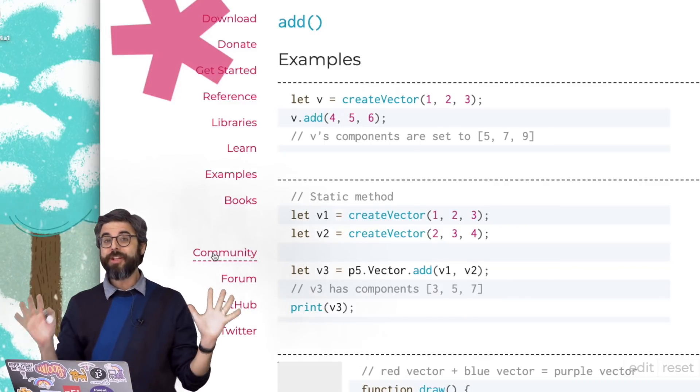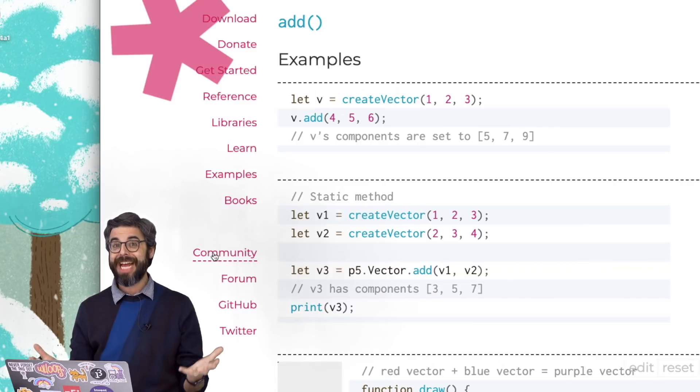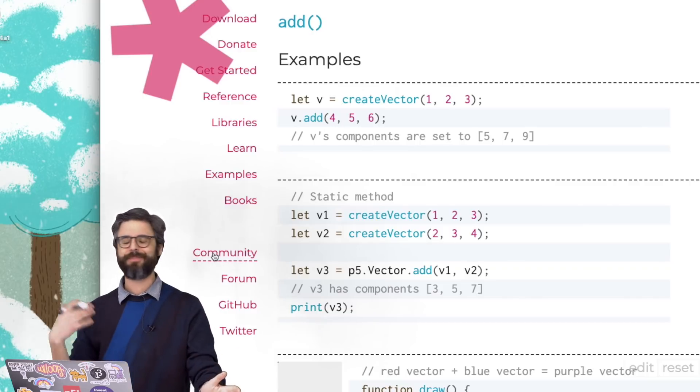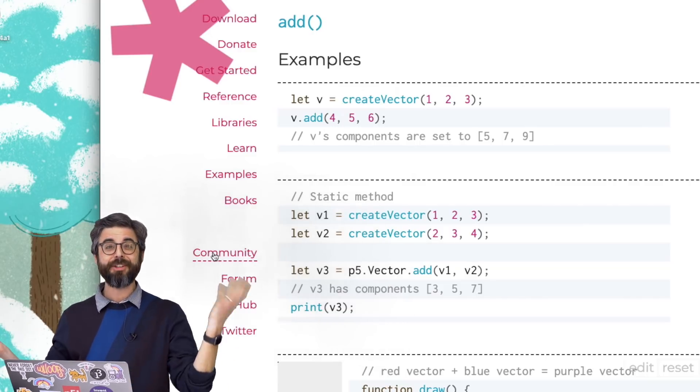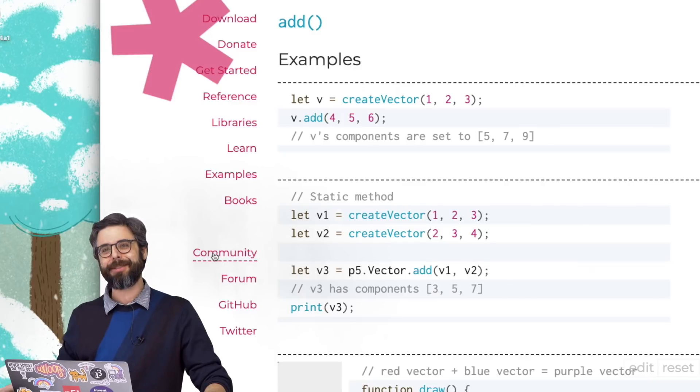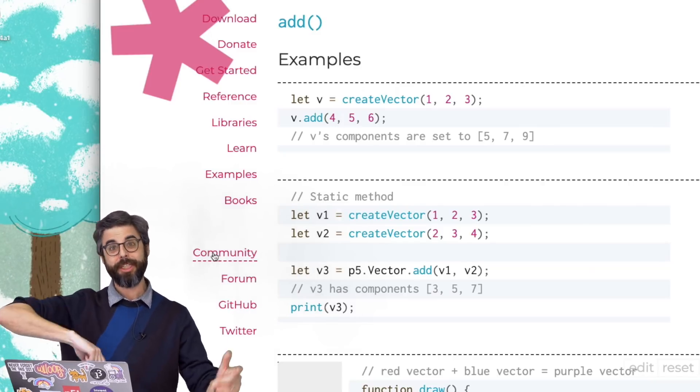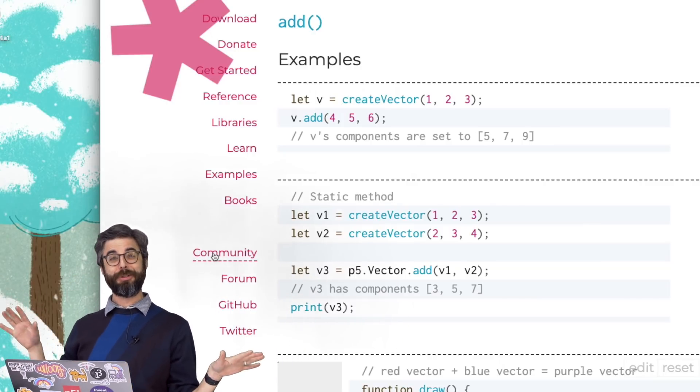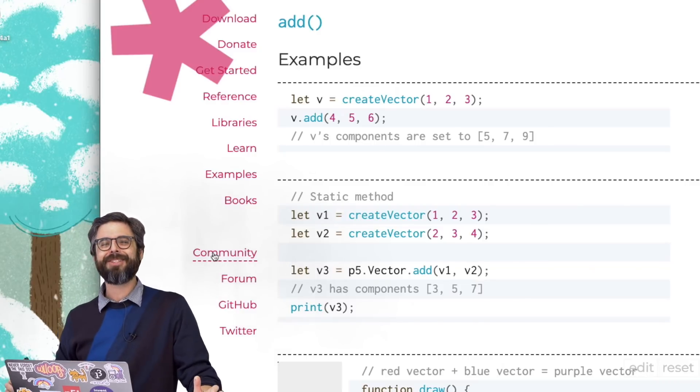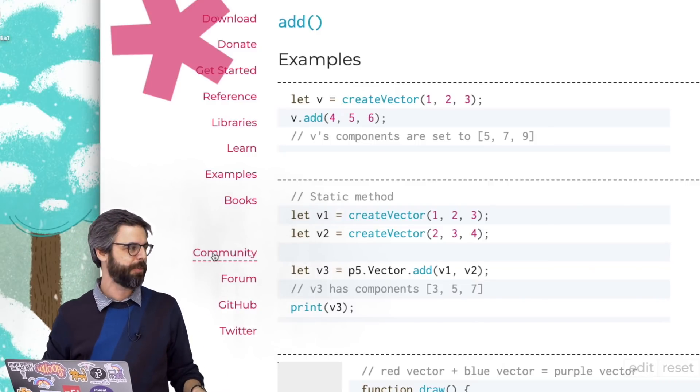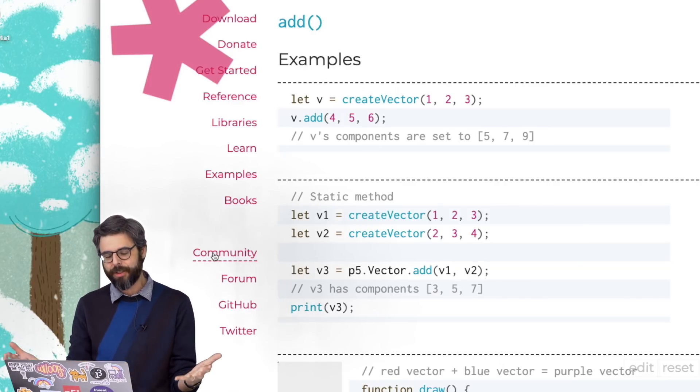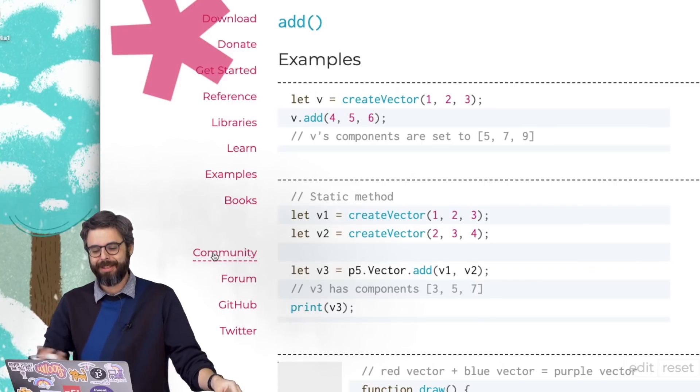So hopefully now this video gives you a bit of a sense of what the difference between a static method is and an instance method. And by the way, I'm just, for better or worse, kind of using the word method and function interchangeably. Technically speaking, a method is a function that's part of a class in an object, and a function as well, a function that exists maybe on its own. But I'm a little bit loosey goosey with this stuff. And so I'm using them interchangeably. But the point of this video was to give you a sense of what static functions are and instance functions, static methods or instance methods.